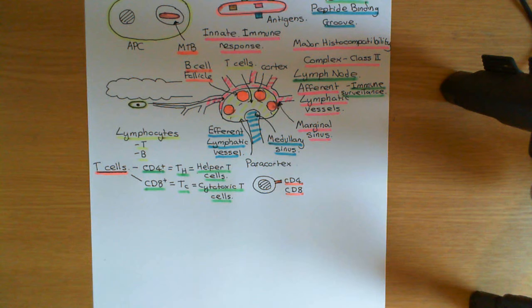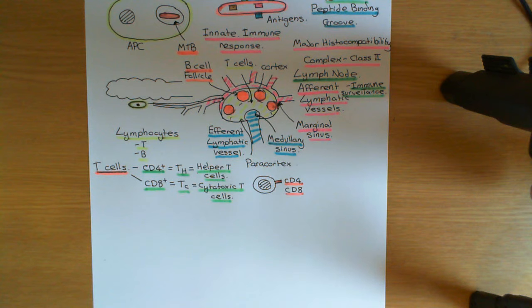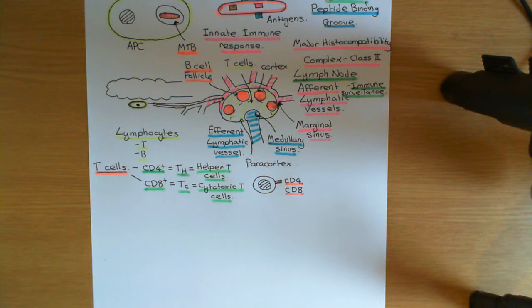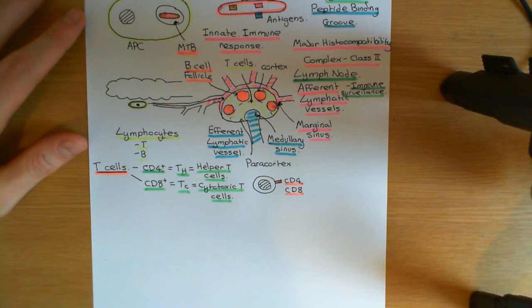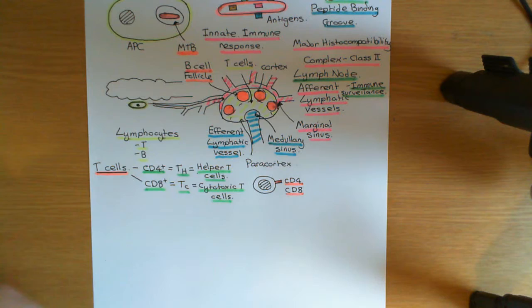These two populations of T cells are involved in very different adaptive immune responses. Helper T cells — the CD4 positive T cells — are the ones activated by antigen presenting cells presenting fragments of antigens on MHC class II molecules, which is what we've discussed. CD8 positive T cells are activated by antigen presenting cells presenting fragments on MHC class I molecules, and are involved in responses to viruses, for instance. We're going to focus only on the CD4 positive T cells.